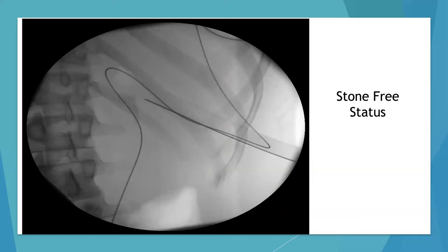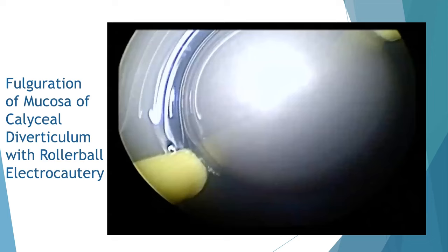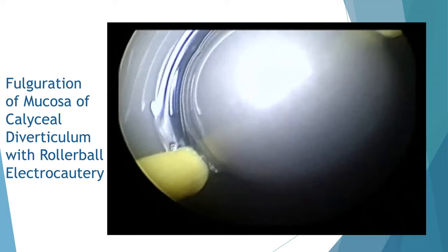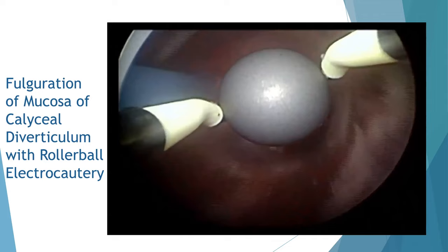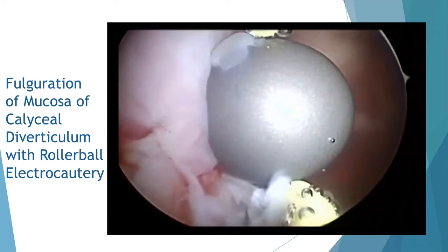The cavity is demonstrated to be stone-free after extraction of the stones. At this time, we proceed to fulguration of the mucosal lining of the caliceal diverticulum. A transurethral resectoscope with roller ball electrocautery was used to completely ablate the lining once stones have been removed.